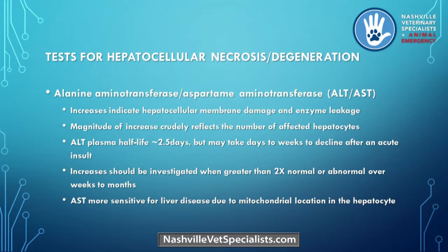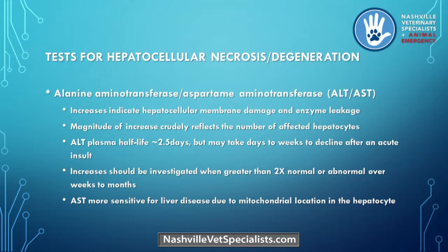When deciding when to really worry about ALT, in general a value two times greater than normal — so around 300 or above depending on your lab — or if we see persistence of the ALT, or if it increases over time regardless of the starting value, are where we need to get concerned. A single ALT of 165 is debatable, but if we're starting out in the 300 to 400 range or above, our anxiety about that finding probably needs to be real.